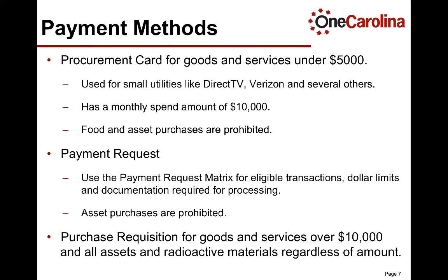The primary payment methods used at the University include the Procurement Card, which is commonly referred to as the P-card. The P-card has a single transaction limit of $4,999 and a monthly limit of $10,000. It is used for purchasing goods and services under $5,000, and includes small utilities like DirecTV, Verizon, and several other commodities. Note that food and asset purchases cannot be made using the P-card.